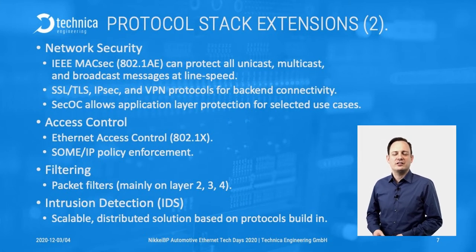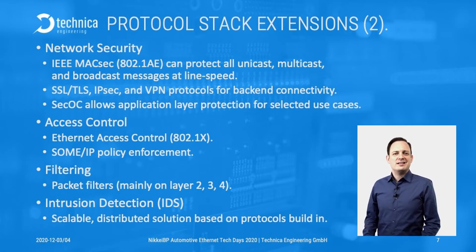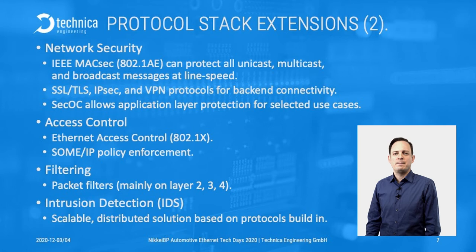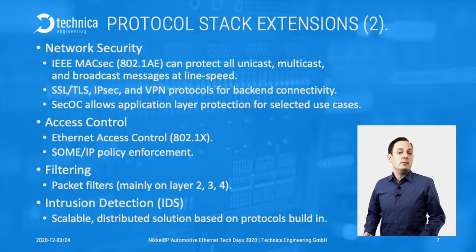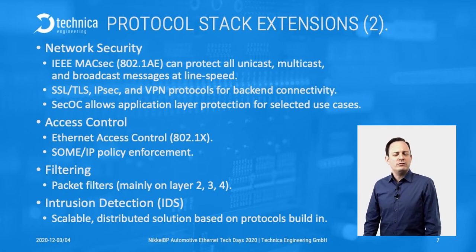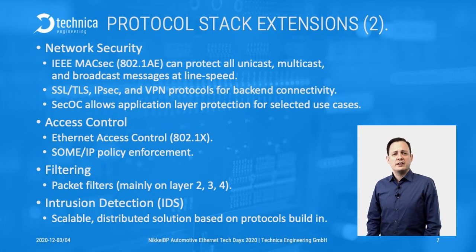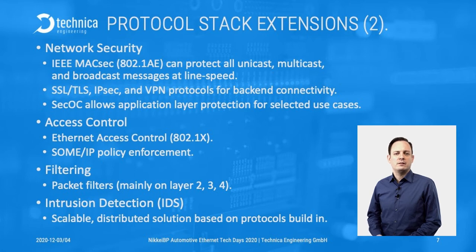We have even more additions to your protocol stack to consider. One thing we have hardly discussed so far is security. While we have shown you VLANs as something you want to have, there are more security features to put in your protocol stack. The most important is network security — you want to protect messages against manipulation and possibly against eavesdropping. Our preferred solution here is IEEE MACsec, 802.1AE. The reason for our recommendation is simple: this protocol can protect all unicast, multicast, and broadcast messages at line speed, making it very easy to have a strong security foundation for your network.